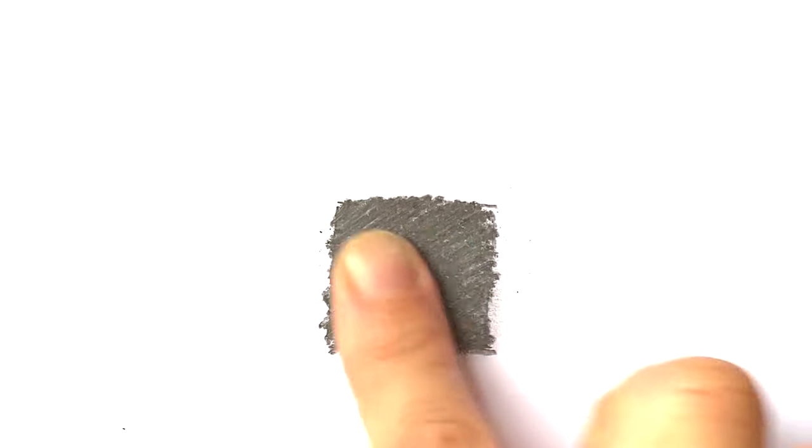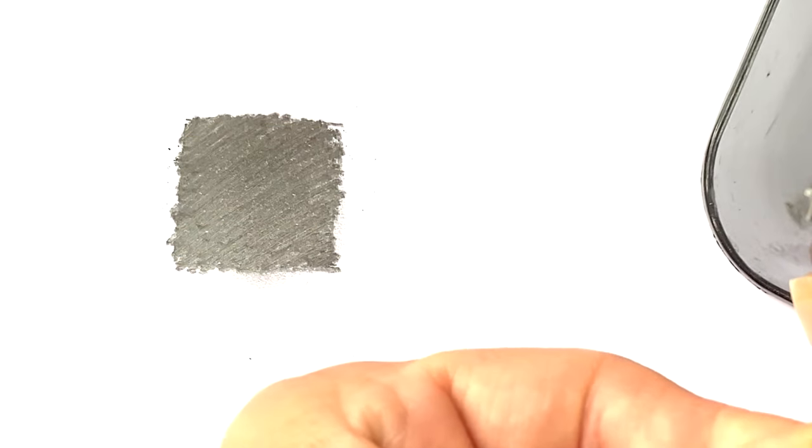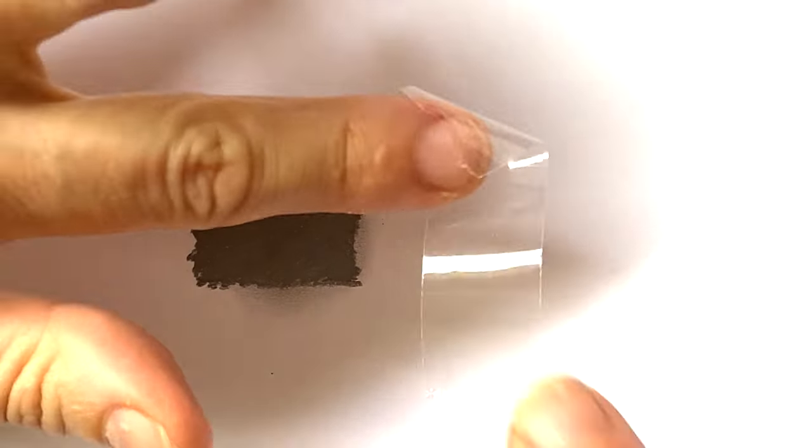Give it a good rub like that, getting lots and lots of that graphite onto your finger. Now I'm going to take a piece of the tape like that and just turn it over so you've got the sticky side facing you.